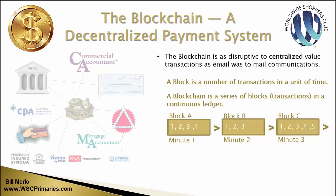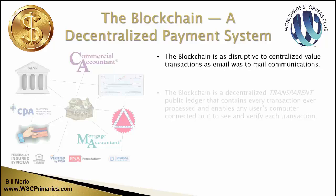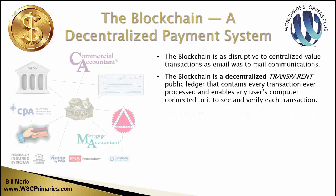I just want you to understand that because it's important for where we're going with this. The blockchain is a decentralized, transparent public ledger that contains every transaction ever processed and enables any user's computer connected to it to see and verify every transaction. Like email or social media, everybody has access to it. Everybody can see every transaction — there are no secrets. Centralizing has lots of secrets; nobody knows anything. No secrets here. Totally transparent.